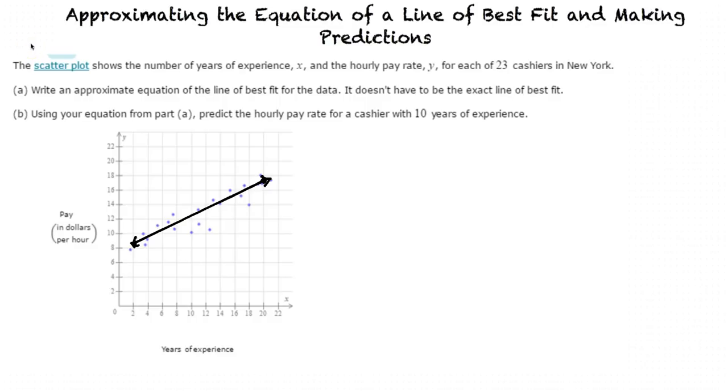Looking at our line, we can see that two approximate points are around 2, 8.5 and 20, 17.